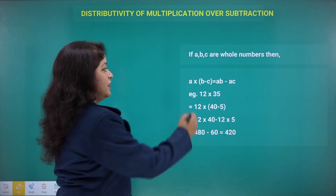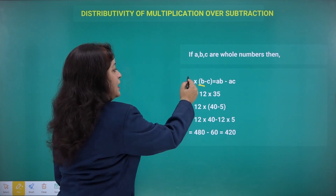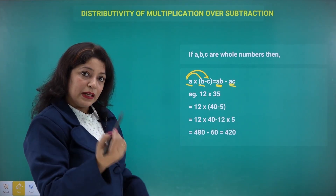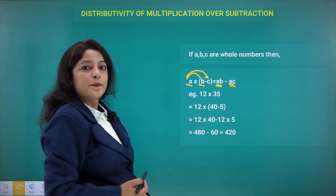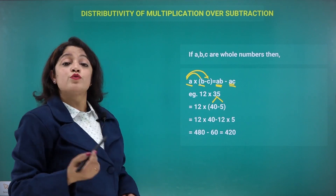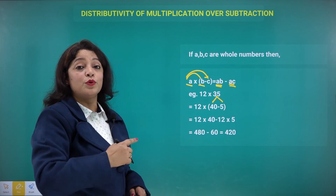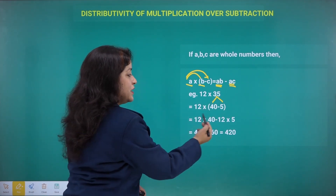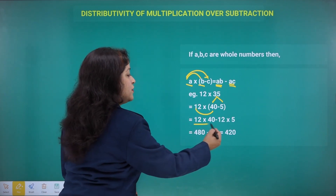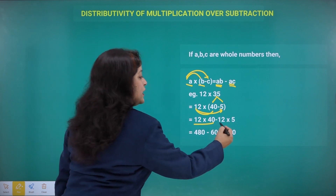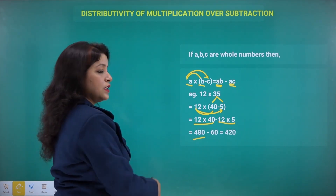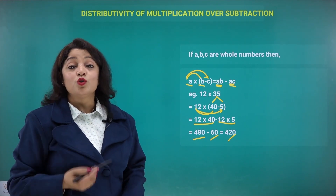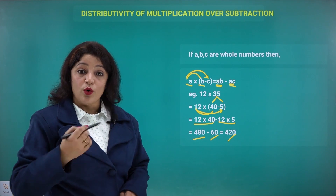For example, 35 can also be written as 40 minus 5. Here, a×b means a multiplied by b and a×c means a multiplied by c. Since we previously split 35 as 30 plus 5 for distributivity over addition, now for distributivity over subtraction, we write 35 as 40 minus 5. Multiplying 12 by 40 gives 480, and 12 by 5 gives 60, so 480 minus 60 gives 420.